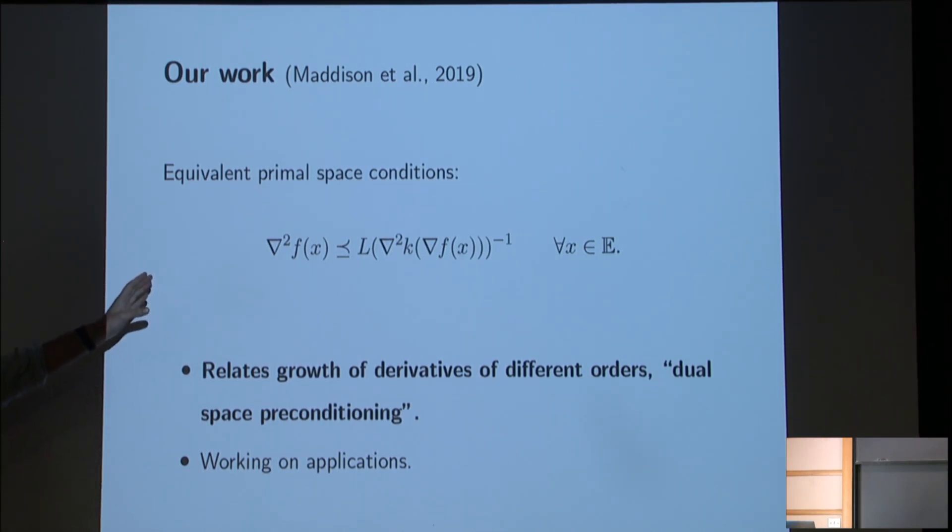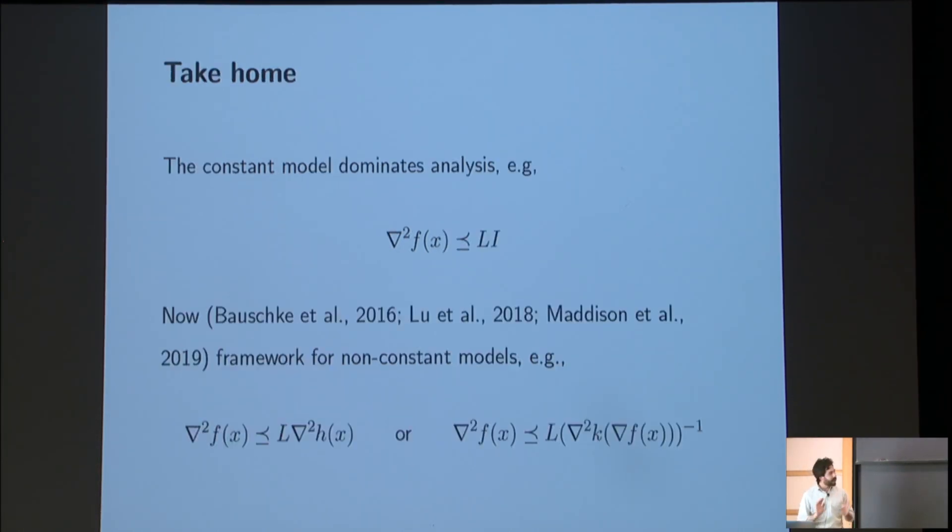We call this dual space preconditioning. And the point is that under these conditions, you can also get convergent algorithms. And we're working on applications. But OK, the sort of take home of this little section is to say that sort of 2016, the constant model of, for example, second derivatives or first derivatives or third derivatives has really dominated the analysis of convex optimization. And now there's this interesting framework, both the conditions that Baushke, Bolte, Teboulle, and Lu, Freund, and Nesterov studied, and the dual space conditions that we do that can incorporate non-constant models.